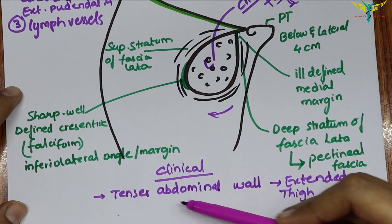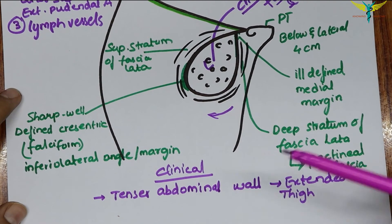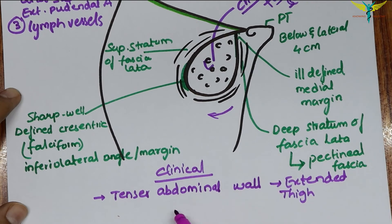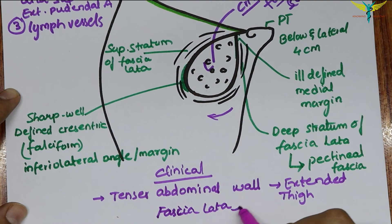So in order to relax the abdomen, the patient is asked to draw the legs upwards to overcome the pull of the fascia lata onto the abdominal wall.